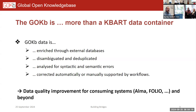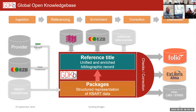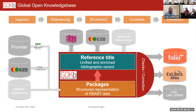We have automatic and manual workflows to get our data in shape so that errors in KBART data don't make it into the system. On one side you see the provider data in KBART format, and we also have other repositories where we get data from. On the lower level we have the packages, and in green you see the reference titles — unique bibliographically enriched titles linked to the package titles. We provide this data mostly for FOLIO, but are now starting to provide it to other systems like OCLC's Alma as well.